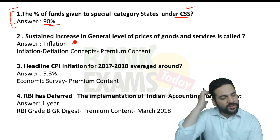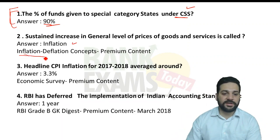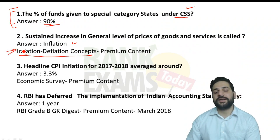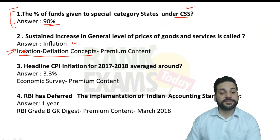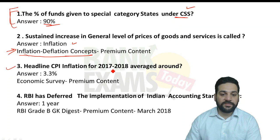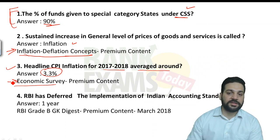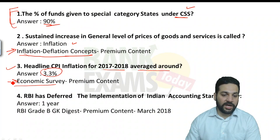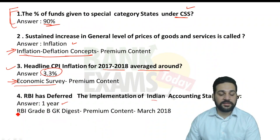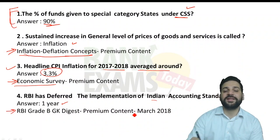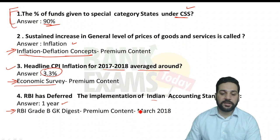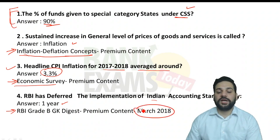The sustained increase in the general level of prices of goods and services is called inflation — a very simple question that was part of the inflation and deflation concepts video in our premium content and NABARD Grade A course. The headline CPI inflation for 2017-18 averaged around 3.3%, covered in our economic survey notes. RBI deferred implementation of Indian Accounting Standards by one year — that was part of the RBI Grade B GK Digest March 2018, part of premium content in the NABARD course.